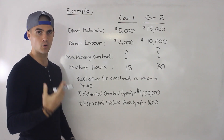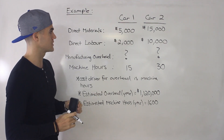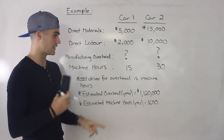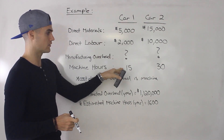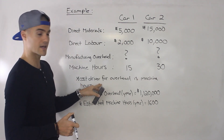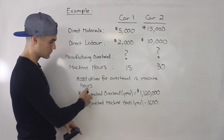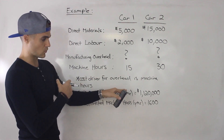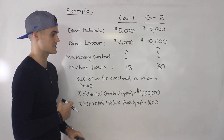Before finishing off this video, let's go over a quick example. Our factory is now manufacturing two cars with respective direct materials and direct labor for each. We're going to apply manufacturing overhead using machine hours as the cost driver. The lower-end car uses 15 machine hours and the higher-end car uses 30 machine hours. The estimated manufacturing overhead for the year is $1,120,000, and the estimated machine hours for the year is 1,600 hours.